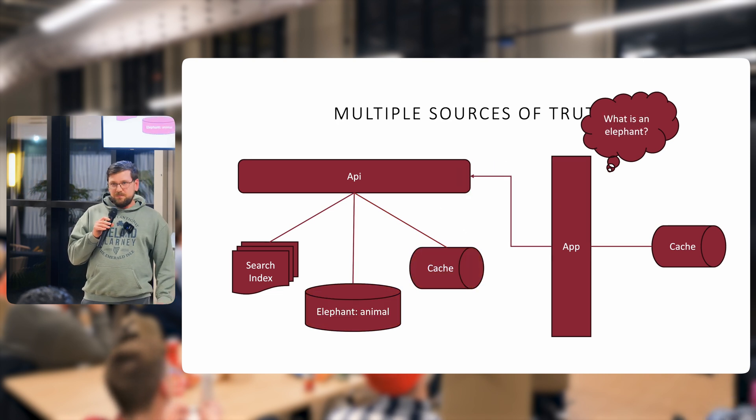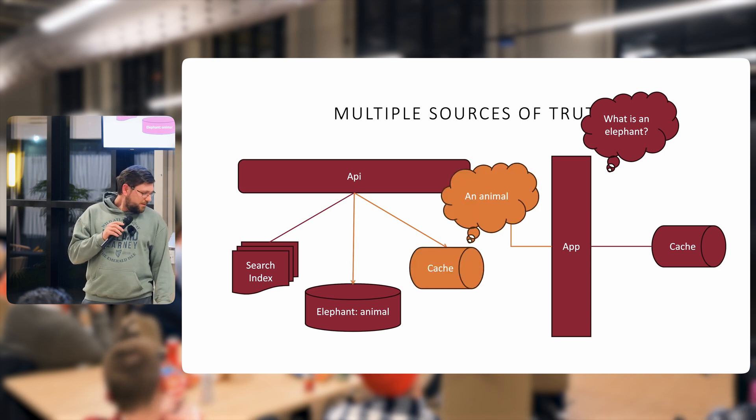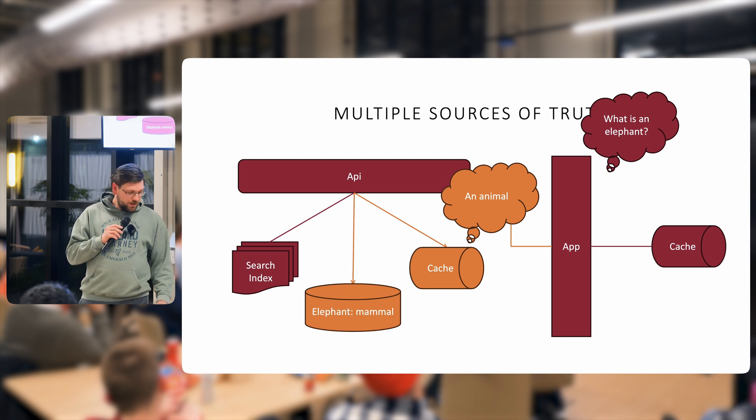We'll pause time. Go to another request. What is an elephant? Call our cache. Nothing in there, right? So now we ask the database. And in this case, just for giggles, it's an animal now. And so now we'll update our cache so we don't have to do a query again.